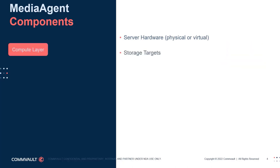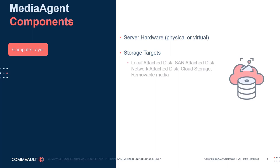The second physical component of a media agent is the storage targets used to hold the various copies of production data. At least one media agent must have write capabilities to copy production data to storage. The storage can be direct-attached, including block storage, network-attached storage, or cloud storage. Storage targets can also be removable media like tape or cloud migration devices, for example Amazon Snowball Storage.